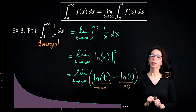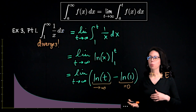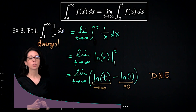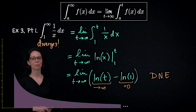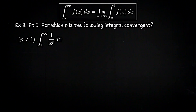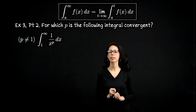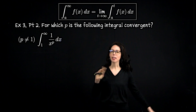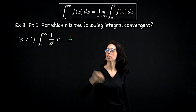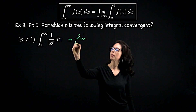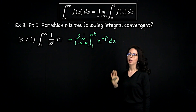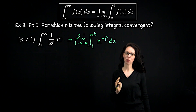We now want to look at the improper integral of 1/x^p from 1 to infinity for what exponents p it converges versus diverges. The case p = 1 was just analyzed using the natural log antiderivative — that's a special case. For every other value of p, we write: limit as t goes to infinity from 1 to t of x^(−p) dx, and apply the power rule. The antiderivative is x^(1−p) divided by (1−p), with p ≠ 1 required to avoid a zero denominator.